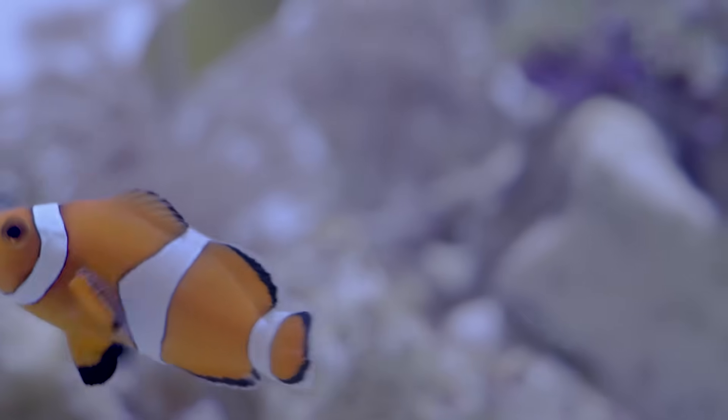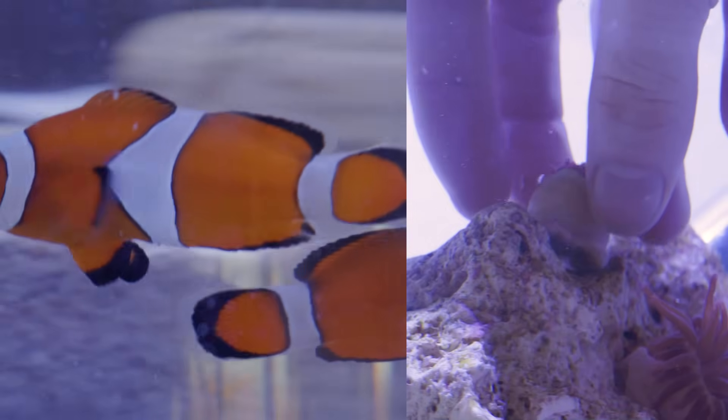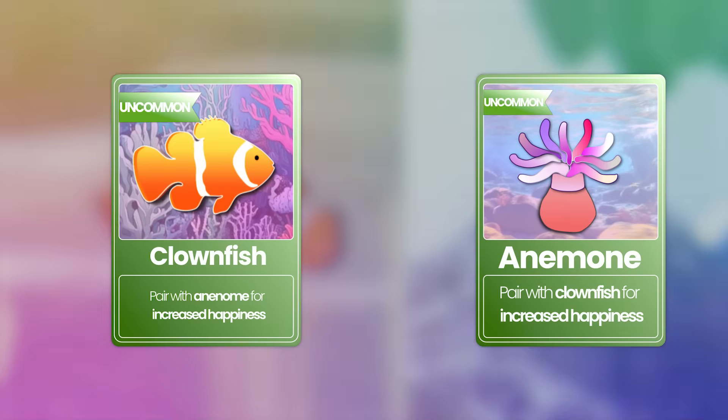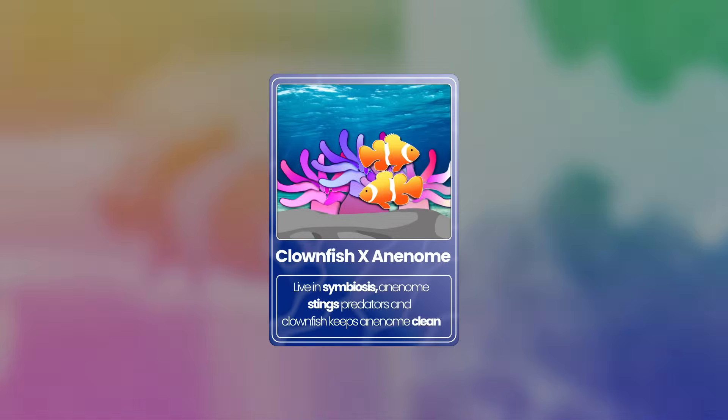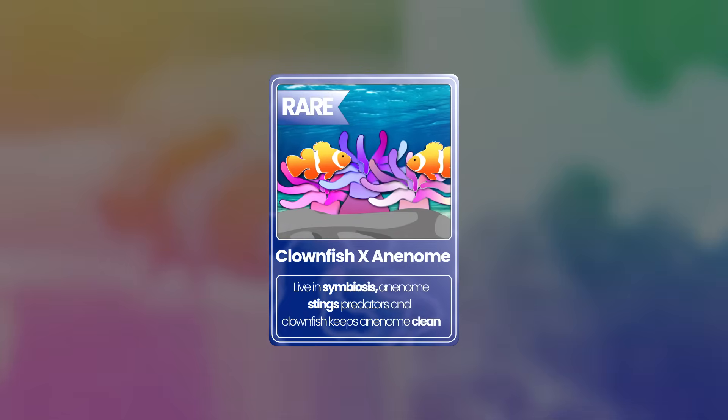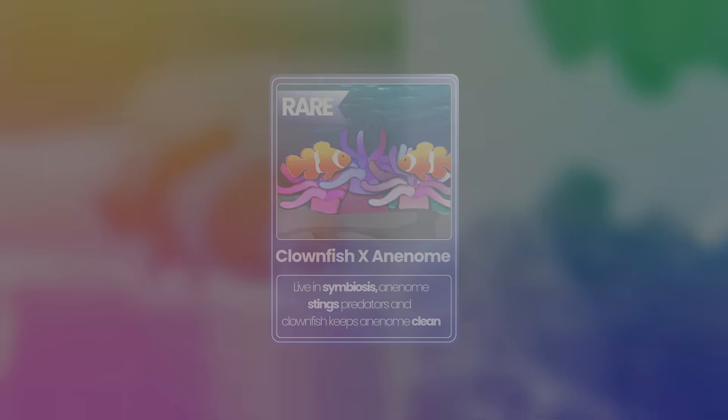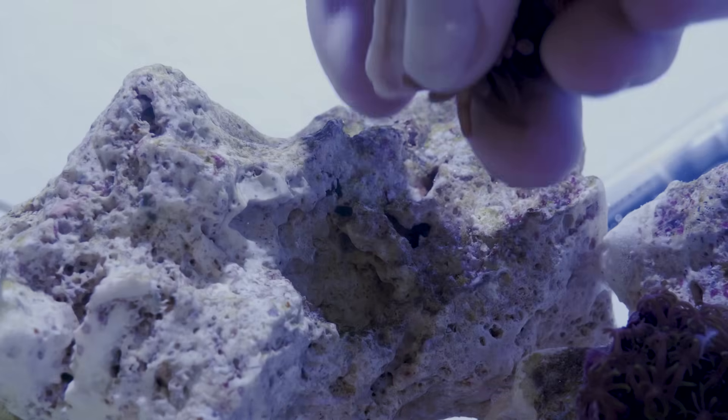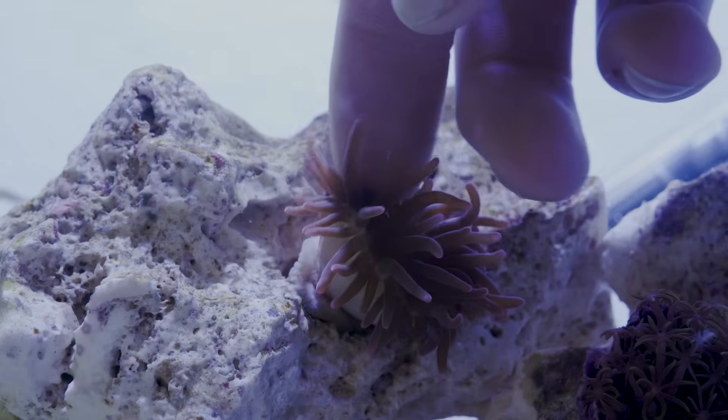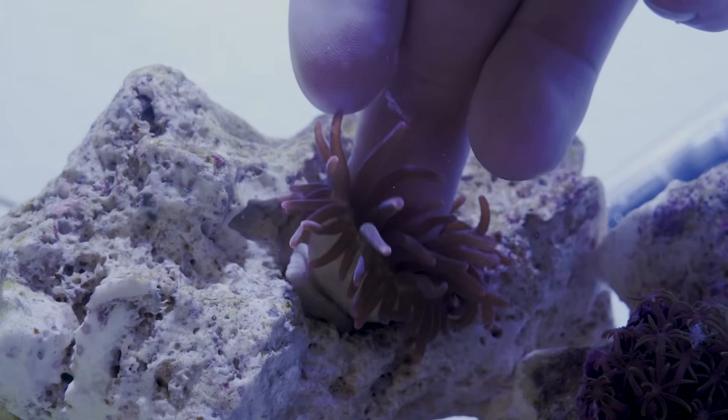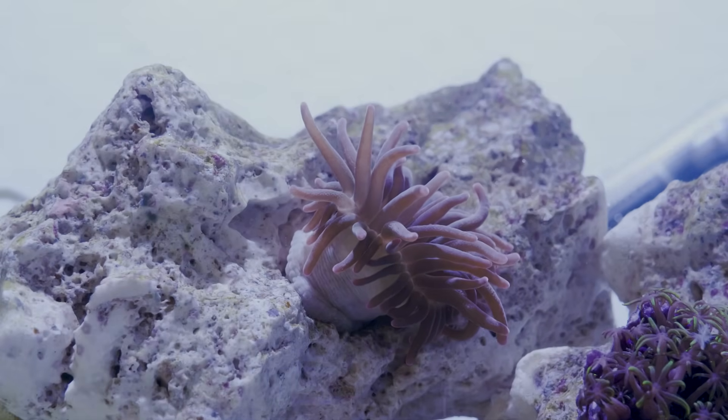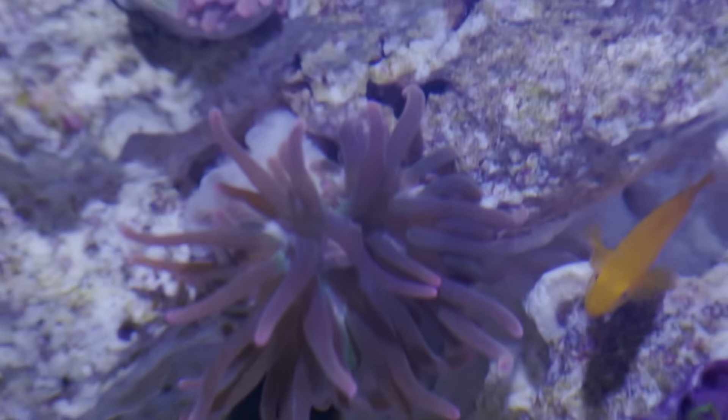Mainly living in a symbiotic relationship with the newest addition to the reef, the anemone. This rose bubble tip anemone is not a coral at all, but an invertebrate and can move around the reef as it pleases using its large foot. Likely it will find a little nook where it's safe and stay there for most of its life.